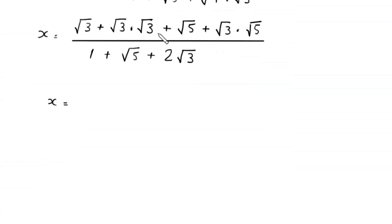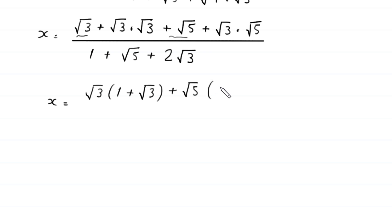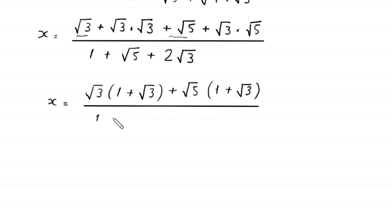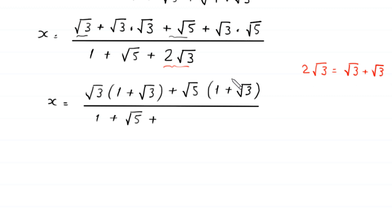From the numerator, we factor out √3 as a common factor from the first two terms, giving √3(1 + √3), and we factor out √5 as a common factor from the last two terms, giving √5(1 + √3). We also rewrite 2√3 in the denominator as √3 + √3.